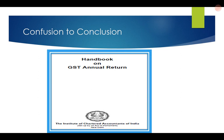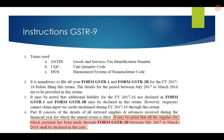Thankfully, there was a lot of confusion regarding this figure, but the Institute of Chartered Accountants has come out with a handbook on the GSTR annual return where the confusion has been removed. Instruction number 4 states that all supplies for which payment has been made through form GSTR3B between July 2017 to March 2018 shall be declared in this part.